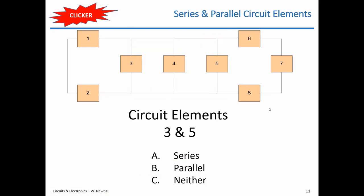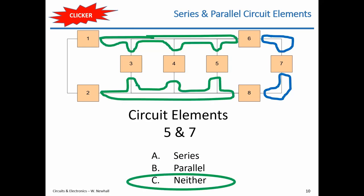Someone clarifies: the blue and green nodes are four separate nodes total. Correct — the node is the entire connection between circuit elements. We have the upper right node, lower right node, lower center node, upper center node — four nodes circled — and another node to the left between elements one and two. So this is a five-node circuit.